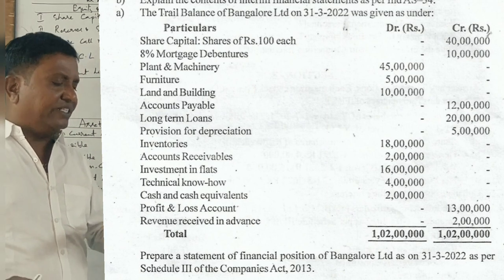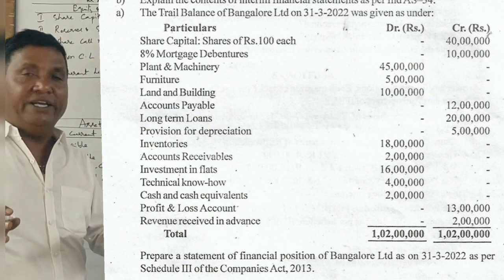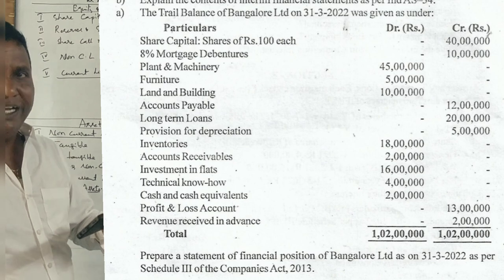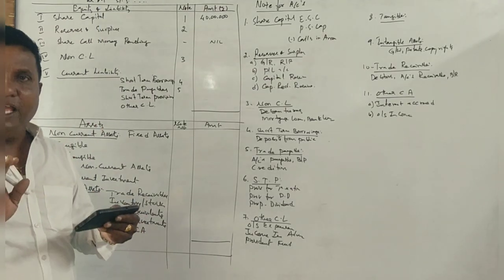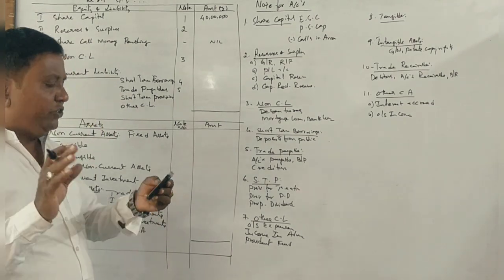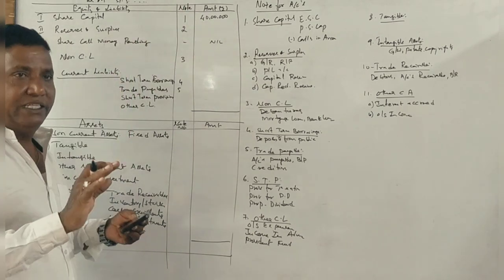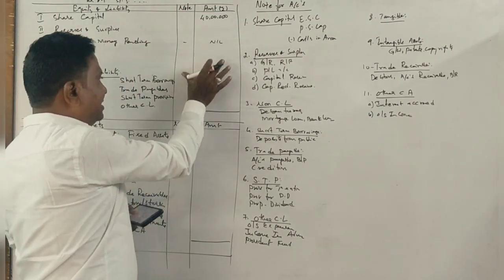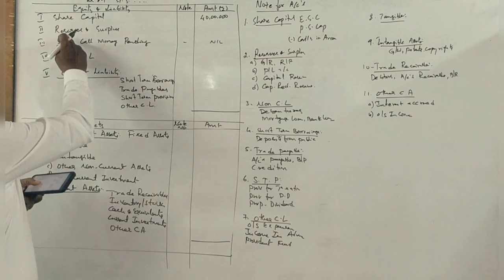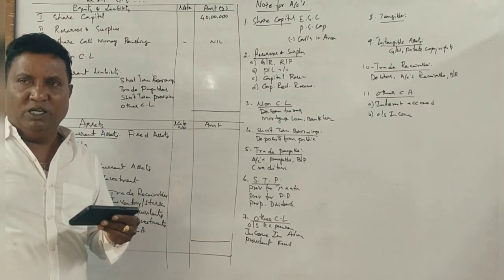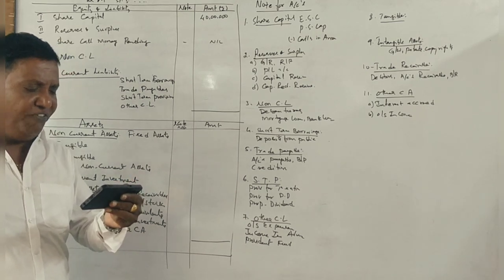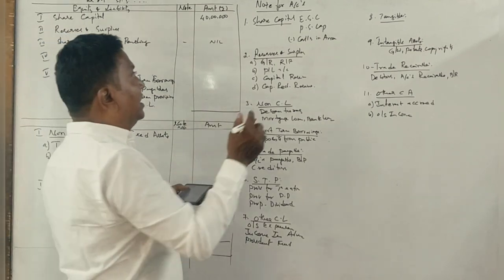The trial balance of Bangalore Limited, March 2022, is given. Share capital of Rs. 100 each — since this classification is not directed, share capital is 40 lakhs. I will not mention any note numbers. Next, reserves and surplus — the first item is profit and loss account, which is 13 lakhs.